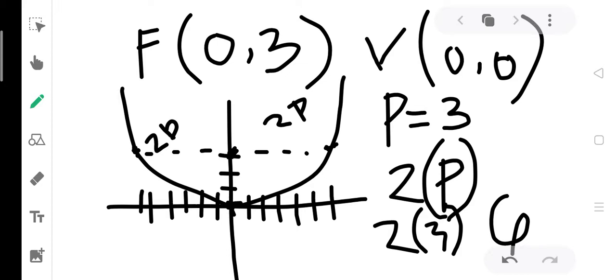Since our focus is 3 units up, and the directrix is opposite, we count 3 units down in the negative y direction: 1, 2, 3. This is our directrix.